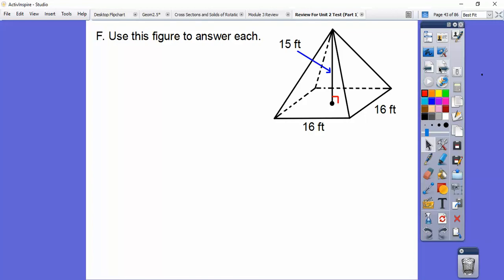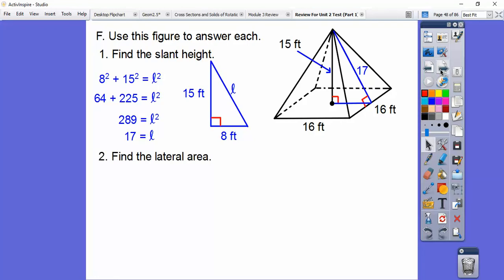Use this figure to answer this. Here's a square pyramid. Find the slant height. If we drew this right here, it's going to be half of this, so it's going to be 8. We have another 8, 15, 17 right triangle. So the slant height is 17. Find the lateral area. That is one-half pl. The perimeter is those 4 sixteens. So we get 64. One-half 64 times 17, I get 544 feet squared.